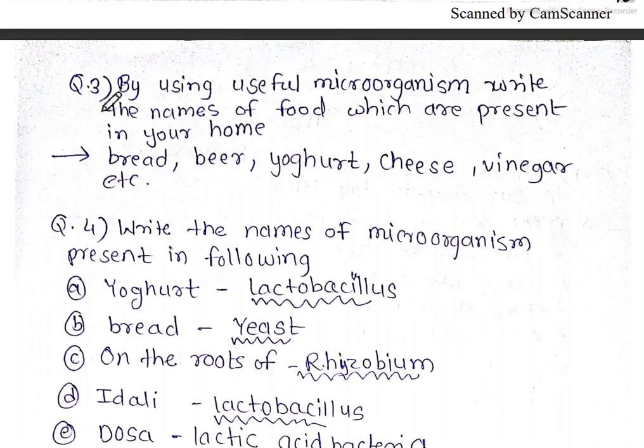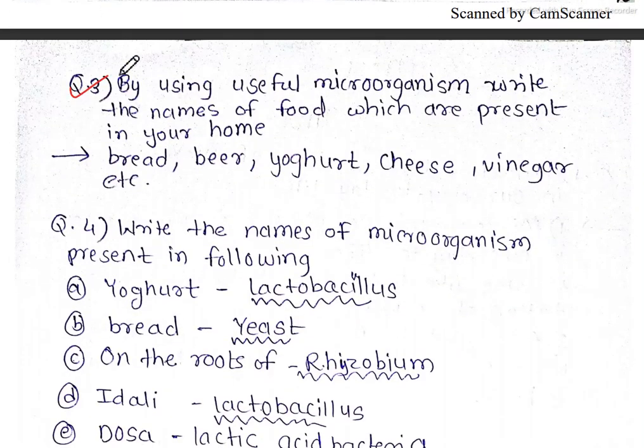Next, question number three: by using useful microorganisms, write the names of foods which are present in your home.